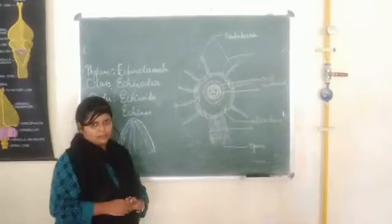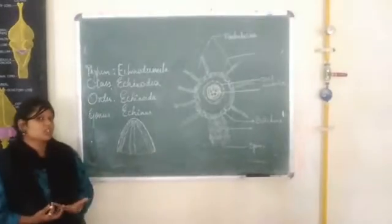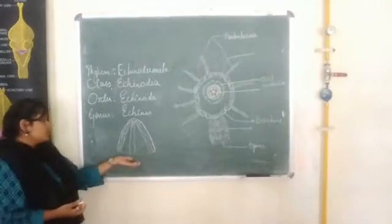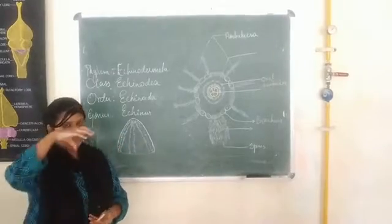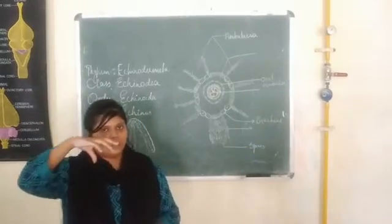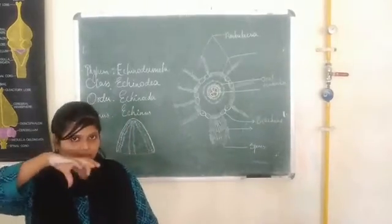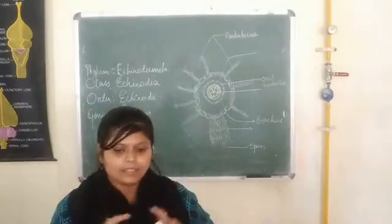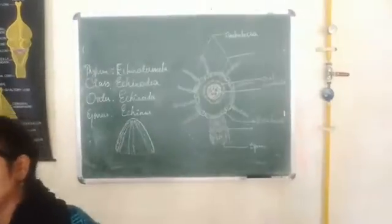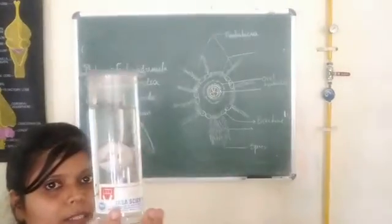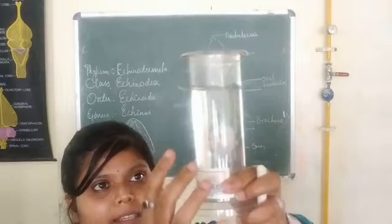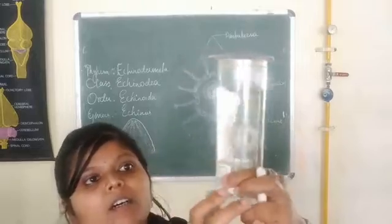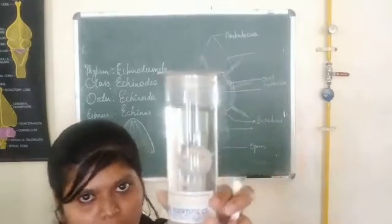Here you should see how these sea urchins look. Sea urchins look like this — they have a small test, a hard calcareous endoskeleton. It is in the form of a test. If you could see this particular specimen, you could identify this as a sea urchin.